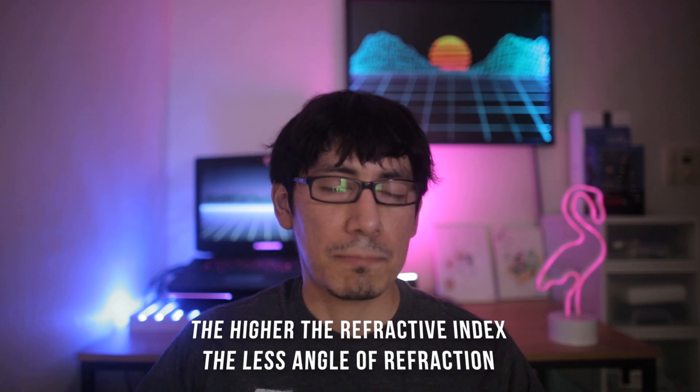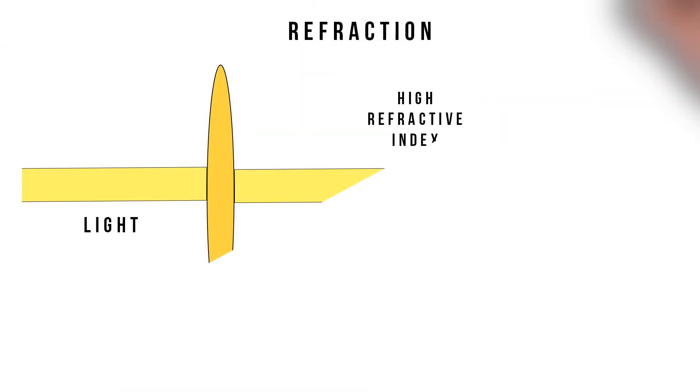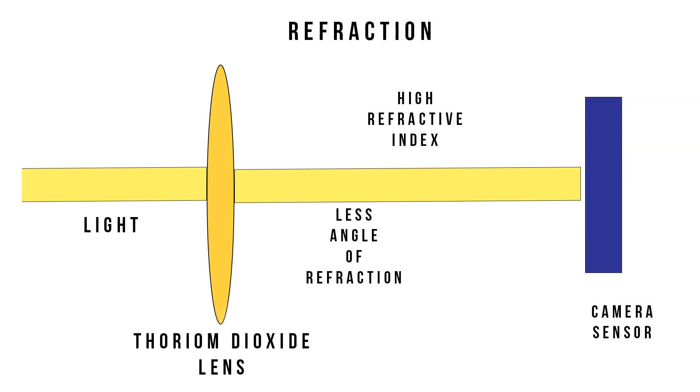Back in the day, they used thorium because of the way it interacted with light. When you put thorium into a lens, it's going to increase the refractive index. To the best of my knowledge, you have a normal piece of glass and light goes through it, shooting in another direction. But if you have radioactive elements like thorium, it's going to kind of pull the light to go in a certain direction — not spread all over the place, but push it straight toward the sensor. Think of it as guardrails on a highway: it tells the light you're going this way, not that way. So it helps refraction.